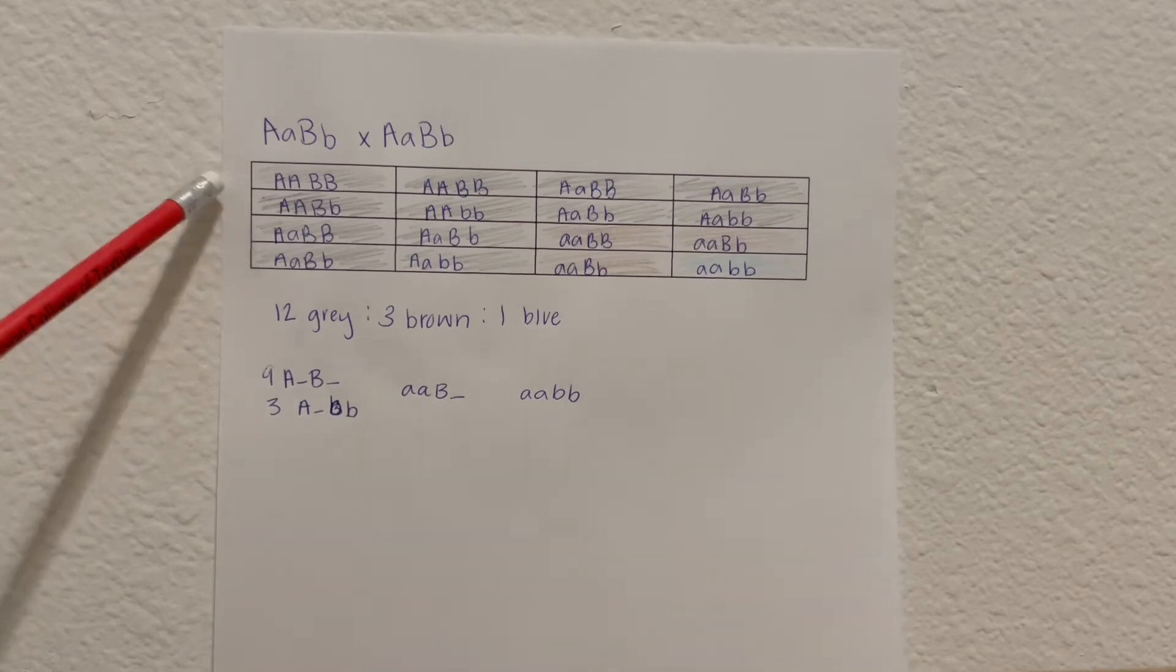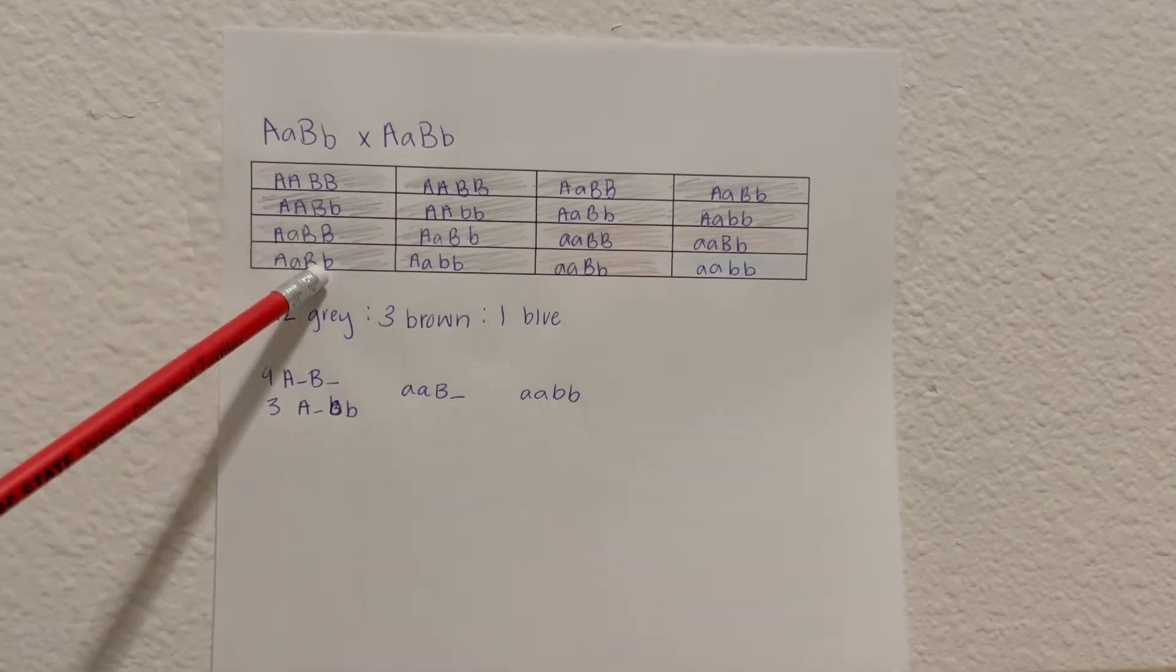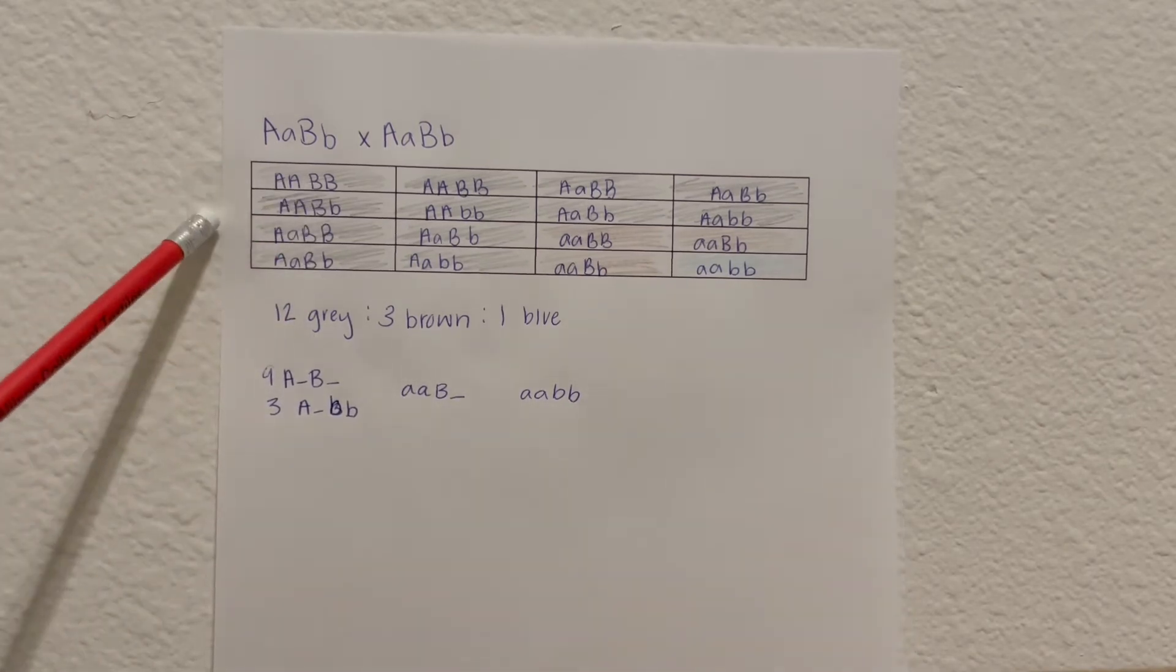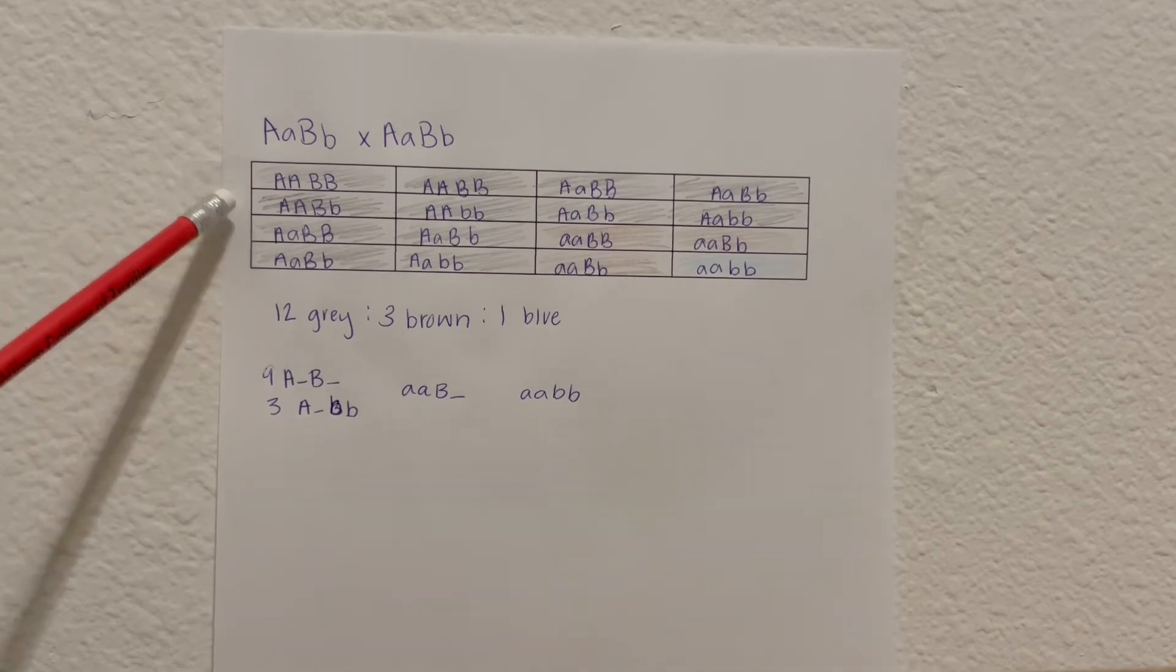This is because the capital A cancels out the B gene, so it does not matter what the B gene is. If there is a capital A, it will be gray.